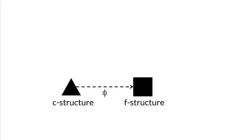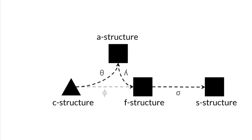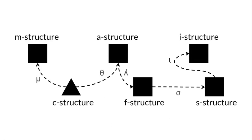Syntactically relevant semantic information can be modeled in S-structure, normally presented as a projection from F-structure. It has also been proposed that argument structures should be represented in a separate module called A-structure, located between C-structure and F-structure. And others have worked on developing I-structure for modeling the interactions of information structure with syntax. M-structure has been proposed for modeling relevant aspects of morphology.